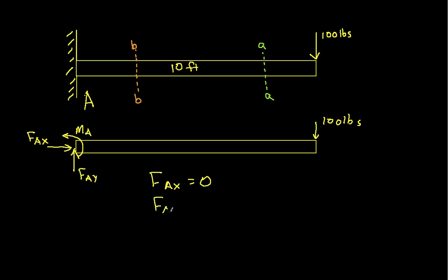If we sum the forces in the y direction, we have FAy minus 100 pounds, and that's equal to 0, which tells us then that FAy is 100 pounds.